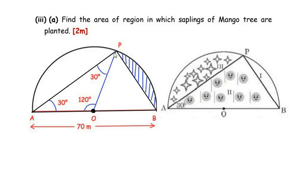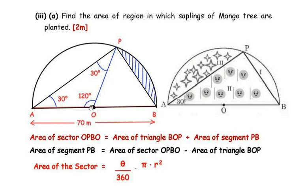To find the area of the shaded region (segment PB), we consider sector OPBO. Sector OPBO is made up of triangle BPO and segment PB. Therefore: area of sector OPBO equals area of triangle BPO plus area of segment PB. Rearranging, area of segment PB equals area of sector OPBO minus area of triangle BPO.